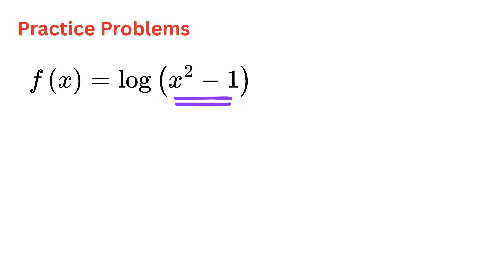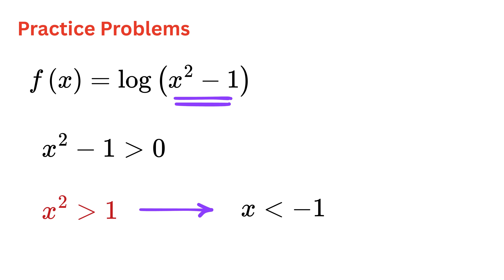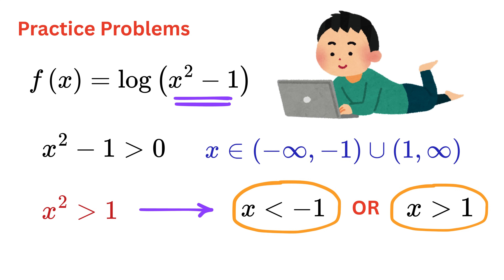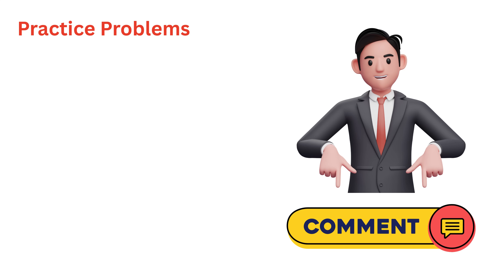Next, find the domain of f(x) = log(x² − 1). By the log rule, the input must be greater than zero, so x² − 1 > 0, meaning x² > 1. This happens when x < −1 or x > 1. Therefore the domain is from negative infinity to −1, union 1 to positive infinity.